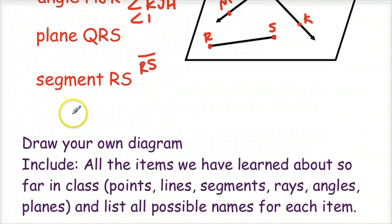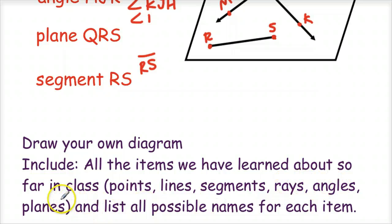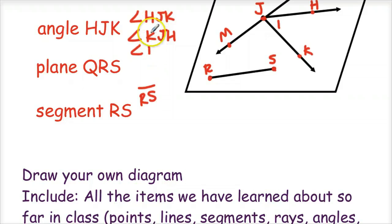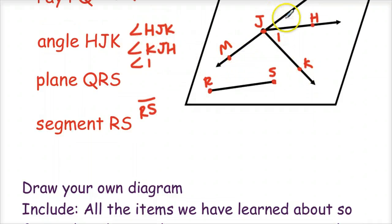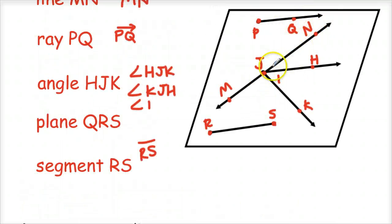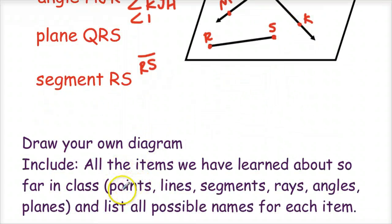What I want you to bring to class tomorrow — and this will be part of our chapter one quiz — is to draw your own diagram. It can look similar to what's above, but all items we've learned about need to be on it: points, lines, segments, rays, angles, and planes — at least one of each. I'd also like you to list out the possible names, just like we did with angle HJK showing all the different ways to identify it. Make sure you're identifying all of those geometric items when you come to class tomorrow.